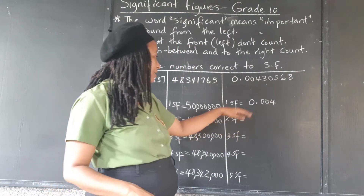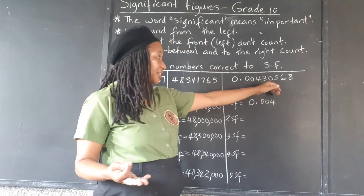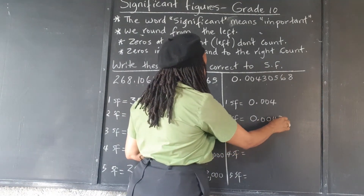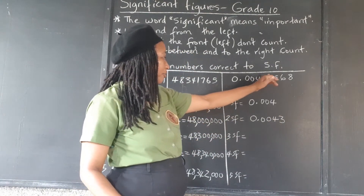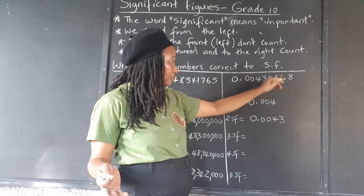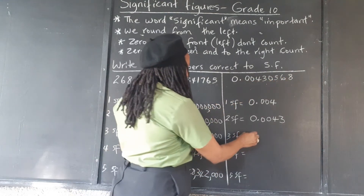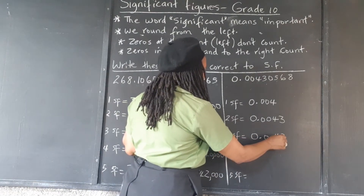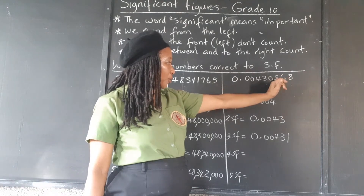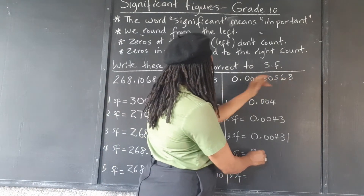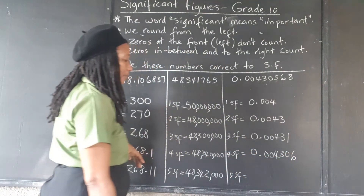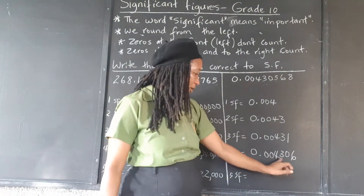Two significant figures: one, two — the next digit is zero, less than five, so no rounding up — that's 0.0040. Three significant figures: one, two, three — the next digit is five, and since it's five or more, we add one to the zero — so that's 0.00431. Four significant figures: one, two, three, four — the next digit is more than five, so we add one — giving us 0.004306.